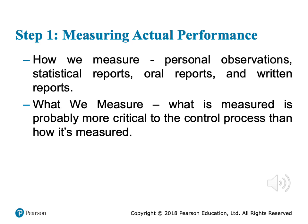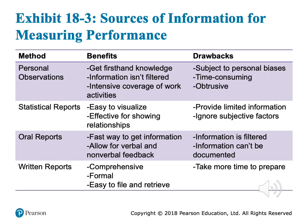The second thing to decide is what we are going to measure. What we measure is more critical to the control process than how we measure. Why? Because when we select the wrong criteria, this can create a serious problem. Also, what is measured often determines what the employee will do. So it is very critical to first decide what you are going to measure, and then decide how you are going to measure it.